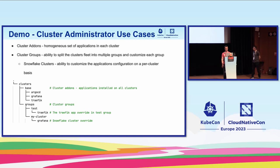The second use case is cluster groups. In real life, applications rarely have the exact same configuration across clusters. Often you want to logically group clusters — for example, splitting into test and production clusters where test clusters get new version upgrades earlier than production. We want to leverage Git for this too. The repository has a groups directory where each subdirectory represents a group, and administrators can bootstrap test clusters with manifests from the 'test' group.